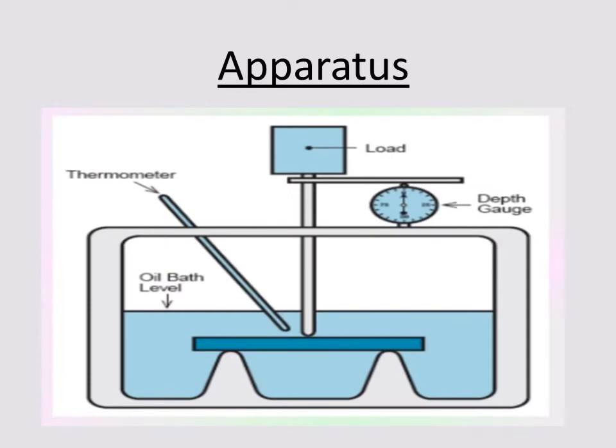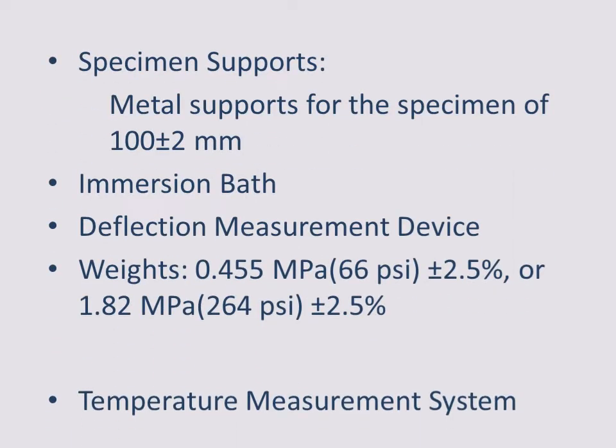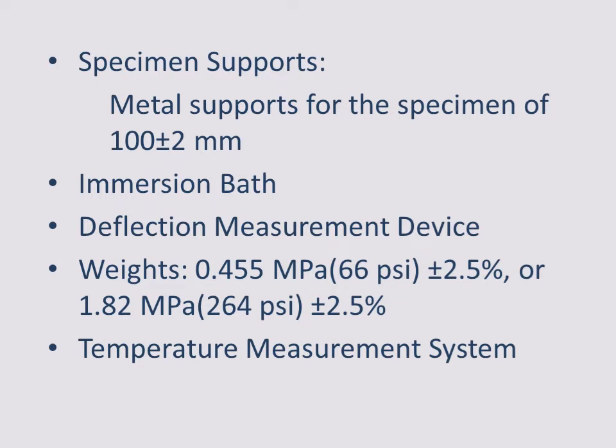This is the diagram of Heat Deflection Temperature. The HDT apparatus parameters include an immersion bath, a deflection measurement device, weights of either 0.455 MPa (66 psi) ± 2.5% or 1.82 MPa (264 psi) ± 2.5%, and a temperature measurement system.